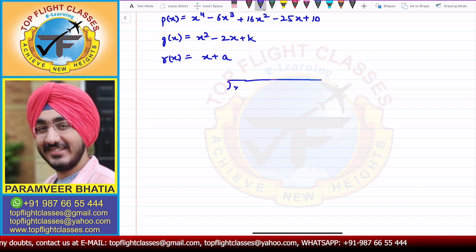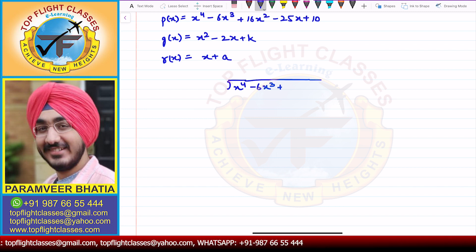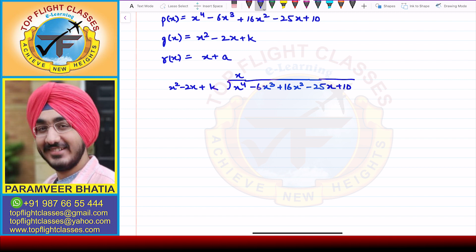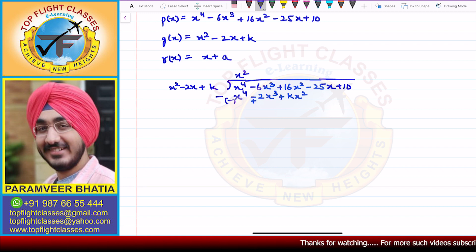So x⁴ minus 6x³ plus 16x² minus 25x plus 10, when divided by x² minus 2x plus k. The first term of the quotient will be x², so that we can eliminate x⁴. So we get x⁴ minus 2x³ plus kx². When we subtract, the signs change and the first term gets cancelled.